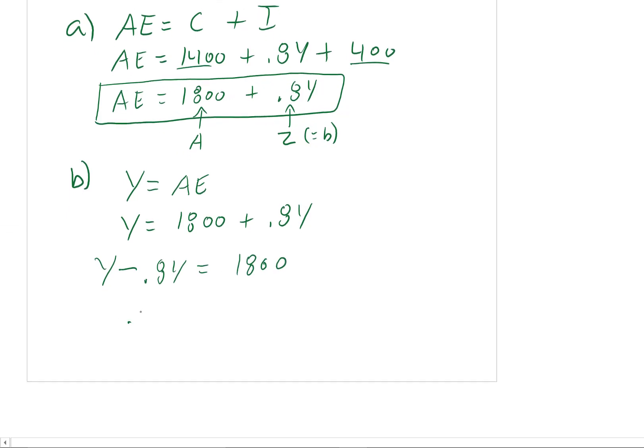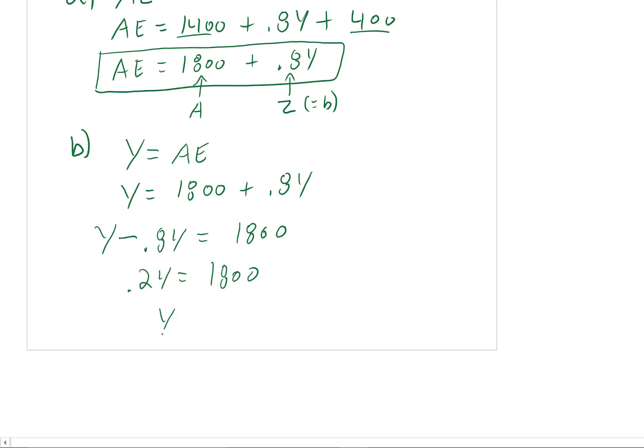And so now we know that Y minus 0.8Y equals 1800. So we're left with 1Y minus 0.8Y, you're left with 0.2Y equals 1800. So now dividing both sides by 0.2, we're left with 1800 over 0.2 equals Y.